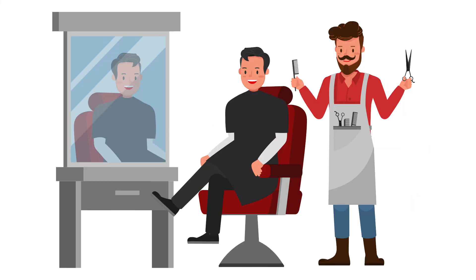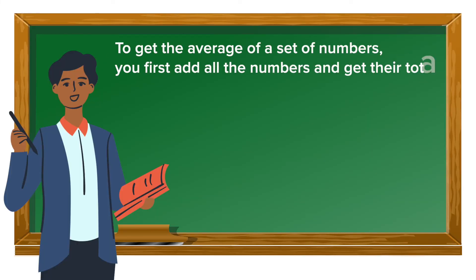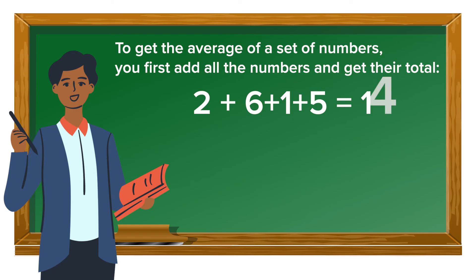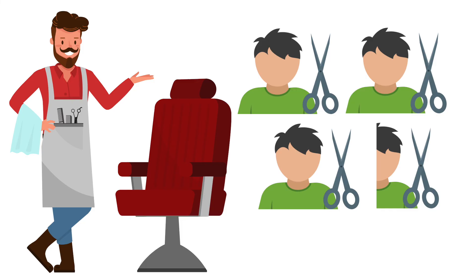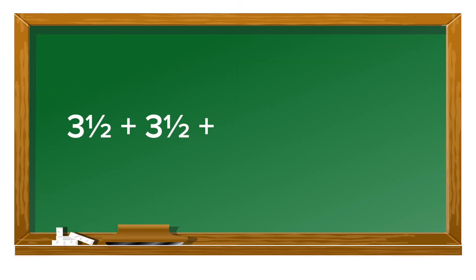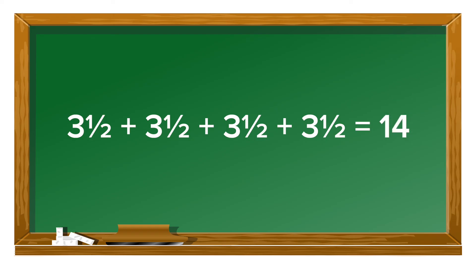We want to know the average number of people that visited the hairdresser each day. To get the average, you do two things. First, you add all the numbers to get their total: two plus six plus one plus five equals fourteen. Once you have the total, you divide it by how many numbers there are. In this case there are four numbers, so we divide fourteen by four. To split fourteen into four equal groups, each group will need to have three and a half. So the hairdresser had an average of three and a half visitors per day.